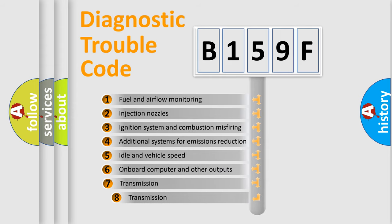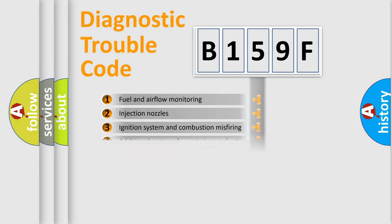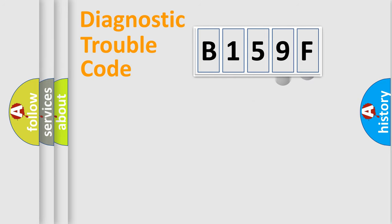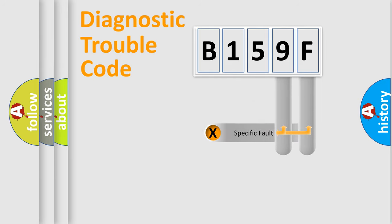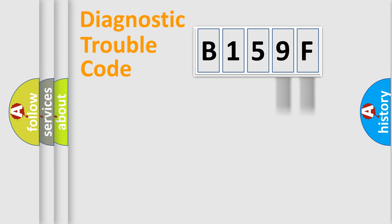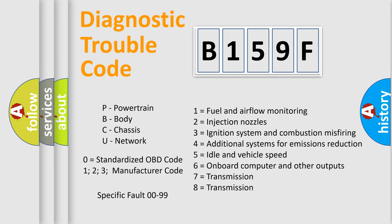The third character specifies a subset of errors. The distribution shown is valid only for the standardized DTC code. Only the last two characters define the specific fault of the group, and this division is valid only if the second character is expressed by the number zero.